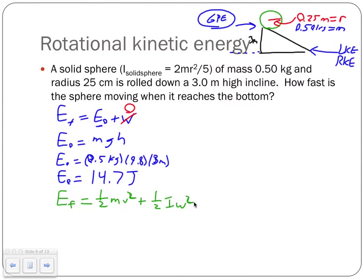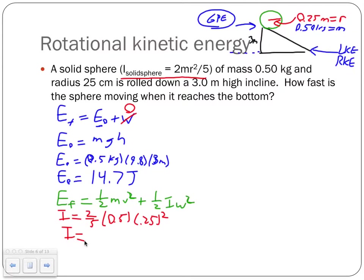We need the moment of inertia for a solid sphere: I = 2mr²/5 = (2/5) × 0.5 × (0.25)² = 0.1 × (1/16) = 0.0125 kg·m². The units are kilogram meters squared, which is correct.